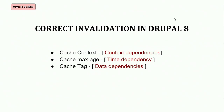What Drupal 8 said was: cache everything, and you should have correct invalidation in Drupal 8. For those who've worked with caching in Drupal 8, correct invalidation with your render API specifically means you should know where to put cache tags, cache contexts, cache max age — these are for your render API to make the page optimized.